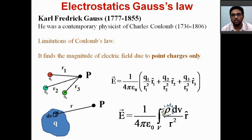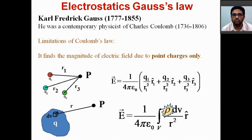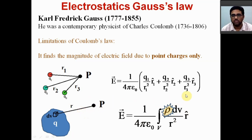Here, rho is the volume charge density, as it is a volume charge distribution. There can also be planar charge distribution or linear charge distribution. To find out the electric field, we have to know the form of this rho, the charge density, and the shape of the charge distribution. Now, if this charge distribution is very much non-uniform, then this integration is very difficult to solve and the electric field cannot be found out easily.